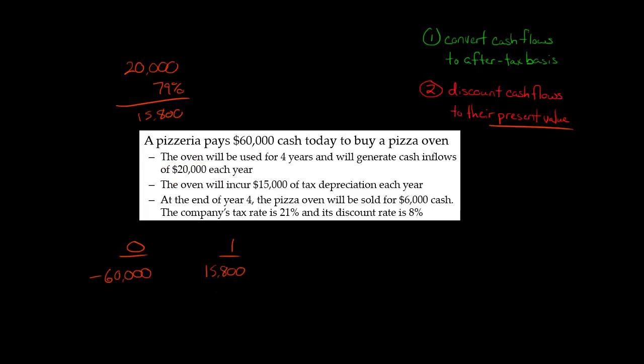Now, we're also going to get a tax deduction for the depreciation. Normally in real life, depreciation would not be the same amount every single year, because for tax purposes, usually you have accelerated depreciation, where you take more depreciation in the early years of the asset. But to make this problem simple, we're just going to say $15,000 every year for four years. We're going to take that $15,000, and we need to know what is the value of that tax deduction, because that deduction is going to reduce the amount of tax we have to pay. We multiply it by our tax rate, 21%. So $15,000 times 21% is $3,150.